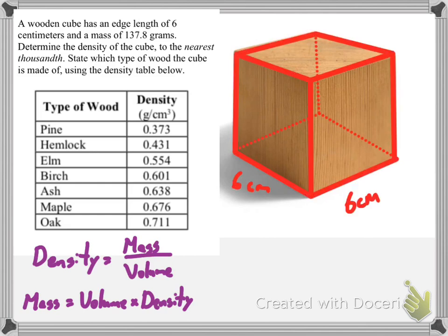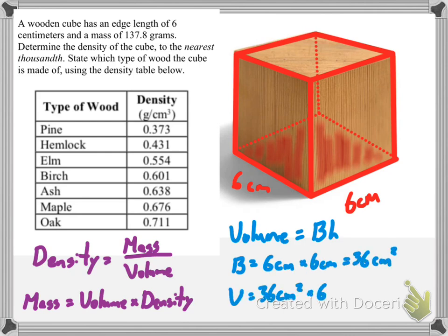So this cube has 6 centimeters on each side. So if we want to figure out the volume of this cube, remember it's the area of the base times the height. And so the area of this base is 6 times 6. So 6 times 6 is 36 centimeters squared, or squared centimeters. So basically this base here is made up of 36 1 by 1 squares. So if I multiply that base by the height of 6 centimeters, then I get 216 cubic centimeters. So that's our volume.